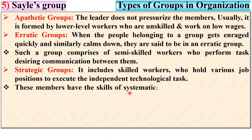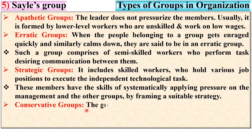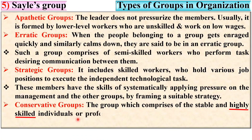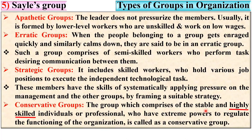Last one, conservative groups: the group which comprises stable and highly skilled individuals or professionals who have extreme powers to regulate the functioning of the organization is called a conservative group. So, conservative groups have highly skilled team members. If you have any questions, write in the comment box. Thanks, dear friends, for watching this video — please hit the like button to appreciate it.